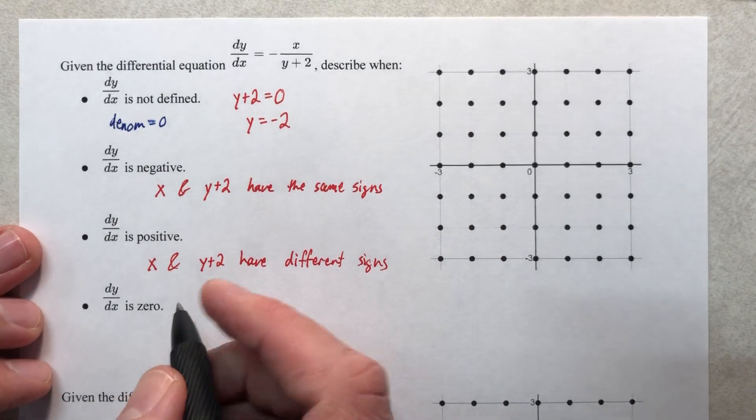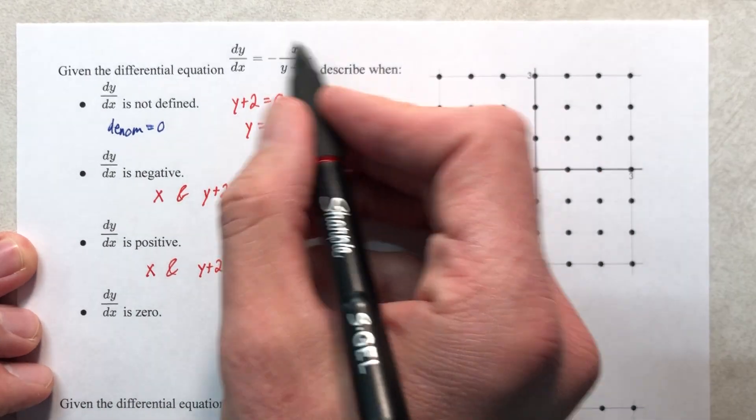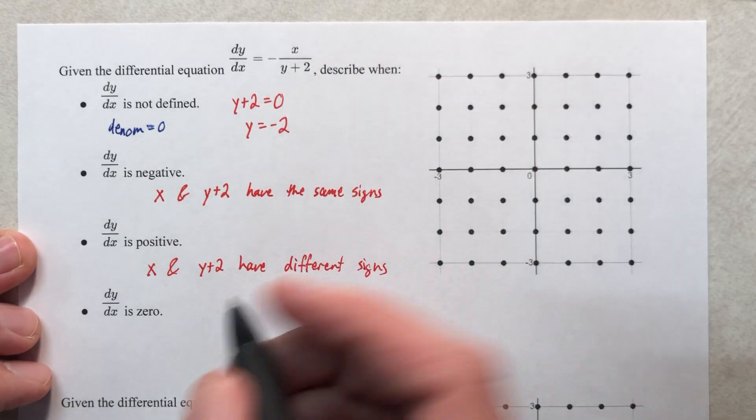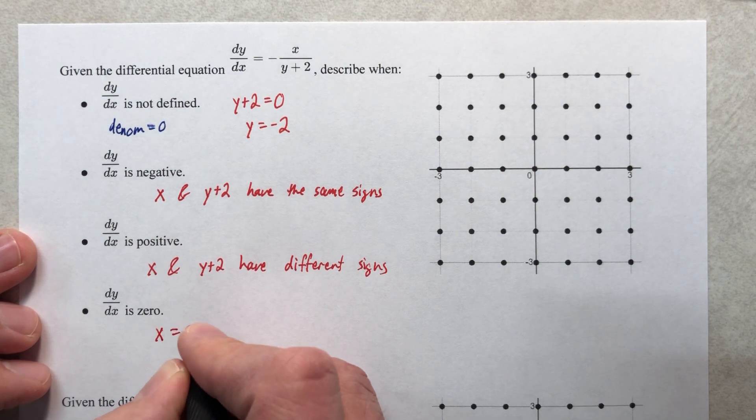Well, if we want our slope to be zero, then how do you turn a fraction into zero? You set the numerator equal to zero. So x would have to be zero.